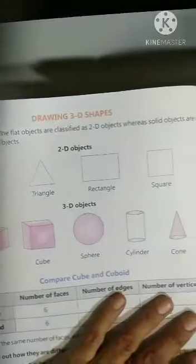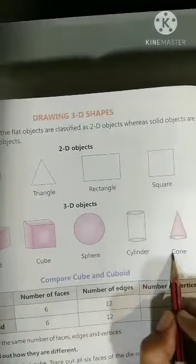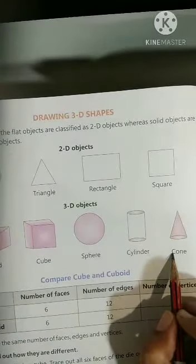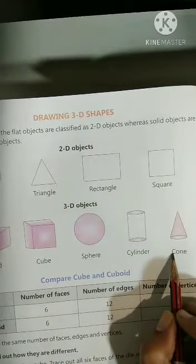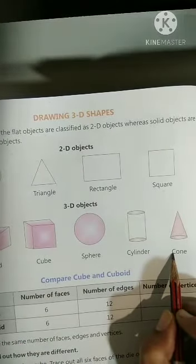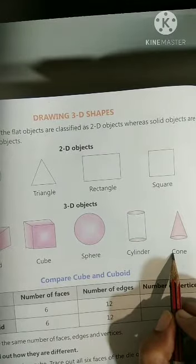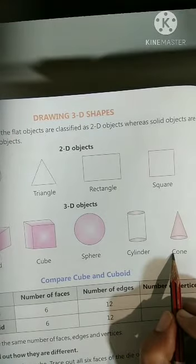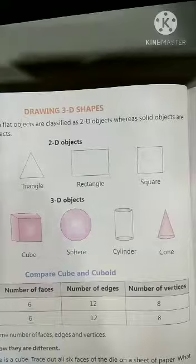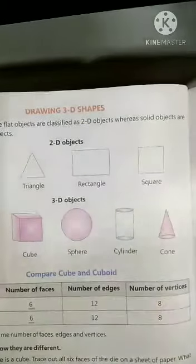Now, the last one is cone. Cone we can make with the paper also. What is the example of cone? Birthday cap, yes. So these are called 3D shapes, which has length, width, and thickness.